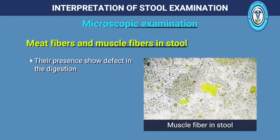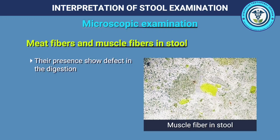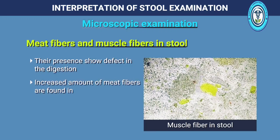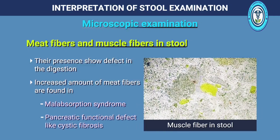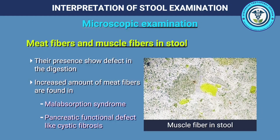Their presence shows a defect in digestion, and an increased amount of meat fibers can be found in malabsorption syndrome and pancreatic functional defects like cystic fibrosis.